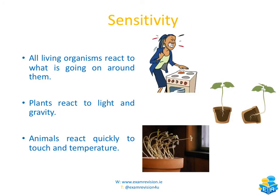The third characteristic is sensitivity, which we can also call response. All living things react to what is going on around them. Plants react to light, but they can also react to gravity. We know that plant shoots grow up and roots always grow down. If we look at a plant on its side, the shoot is still growing upwards, and the roots have moved so that they begin to grow down. That growth response to gravity is called geotropism.